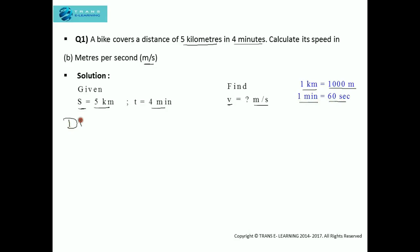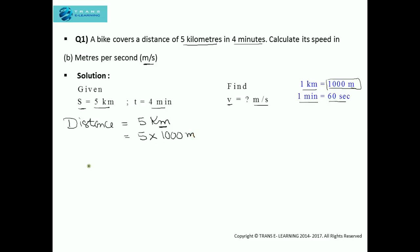1 km = 1000 m and 1 minute = 60 seconds. Converting the distance: 5 km = 5 × 1000 m = 5000 m. And converting time: 4 minutes = 4 × 60 seconds = 240 seconds. Now we have done the necessary conversion for both distance and time.